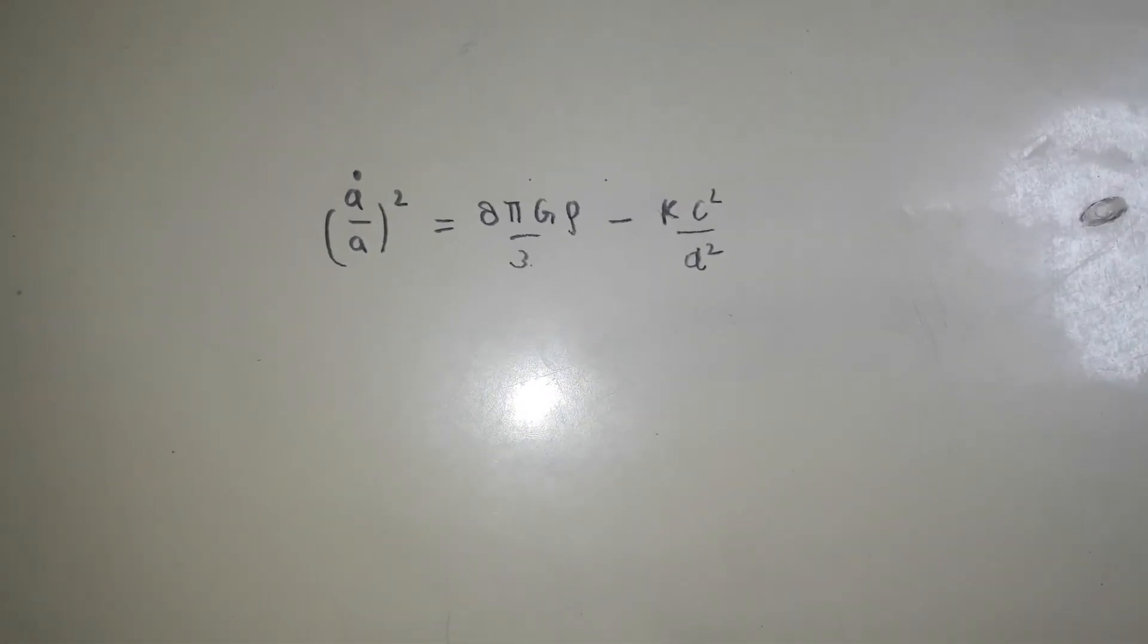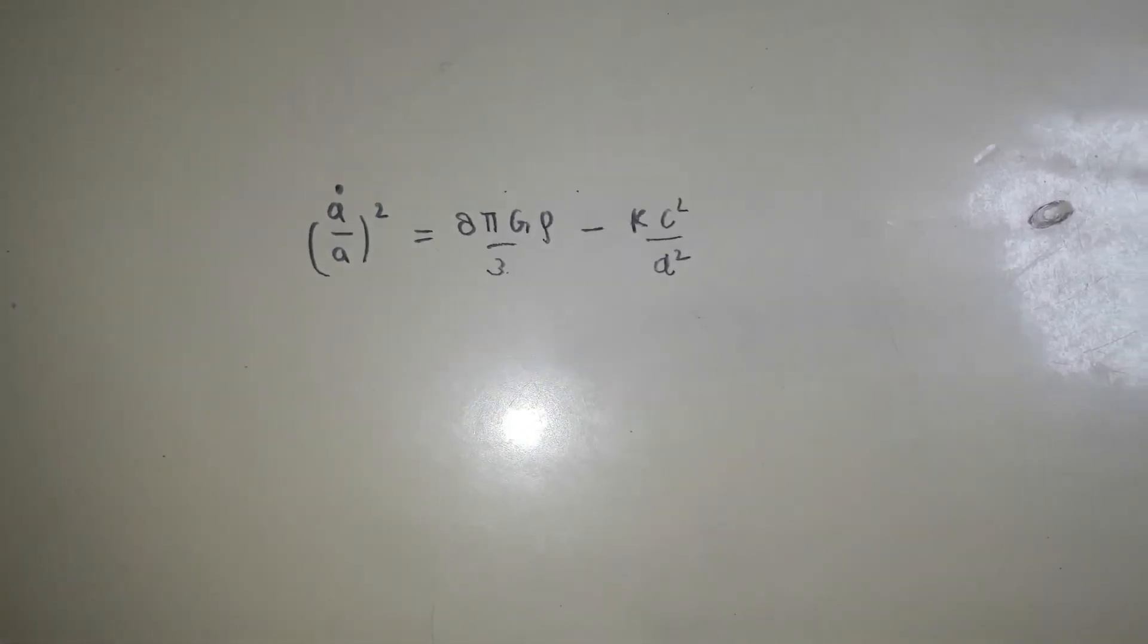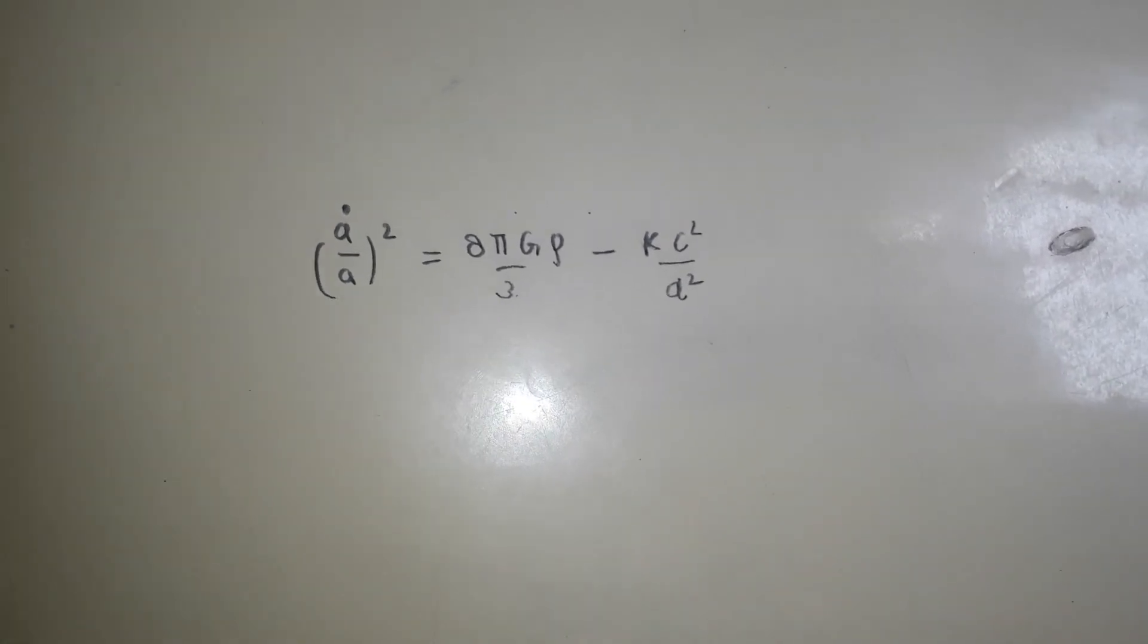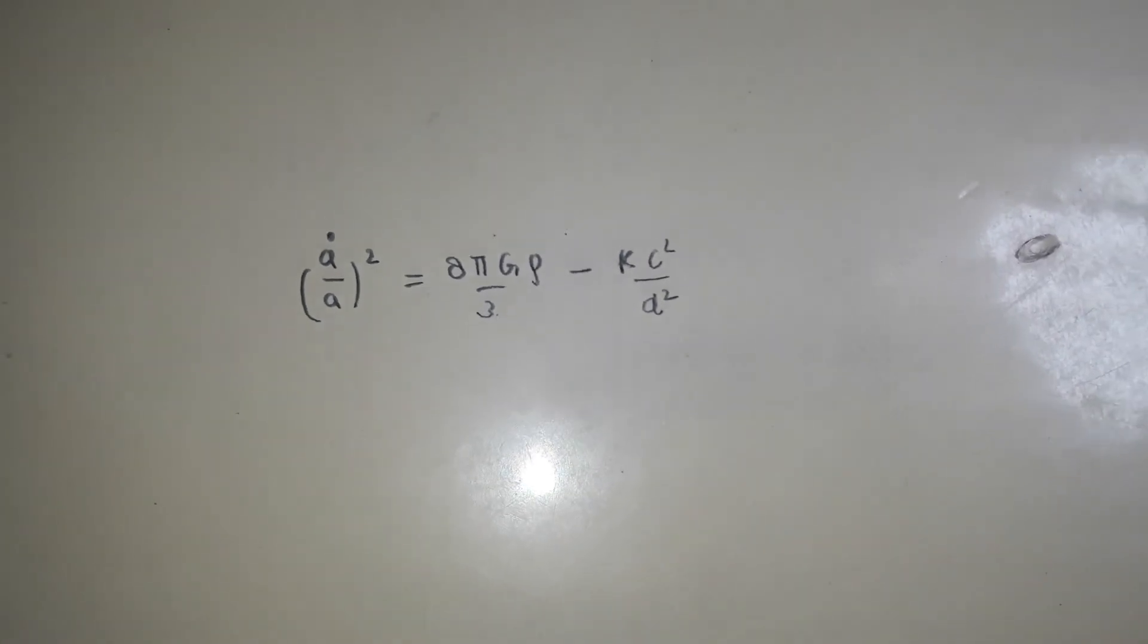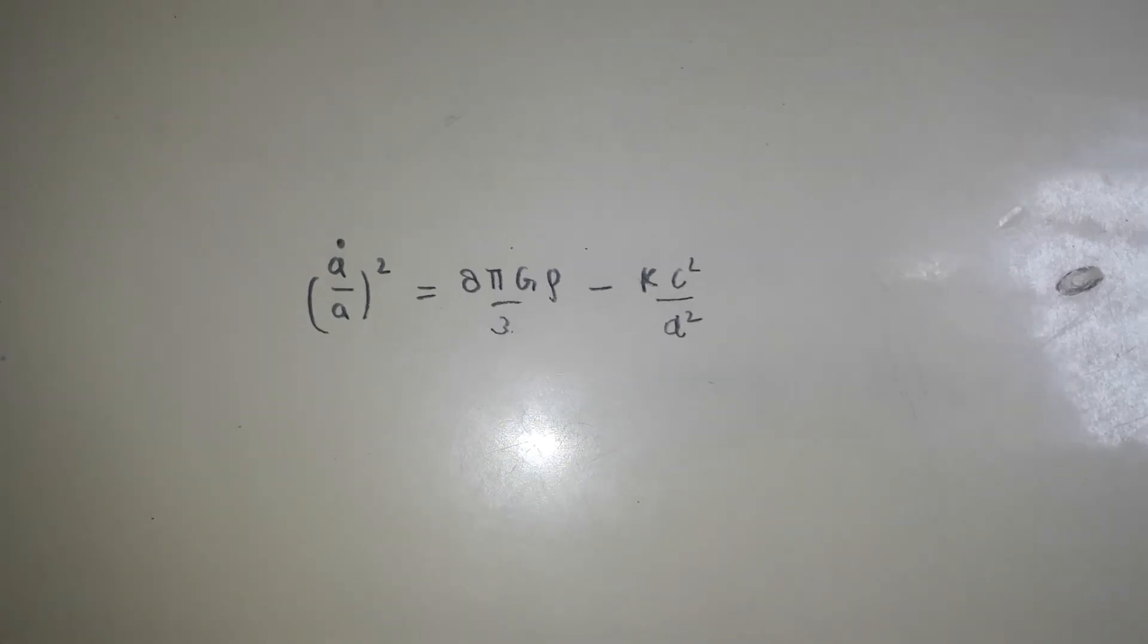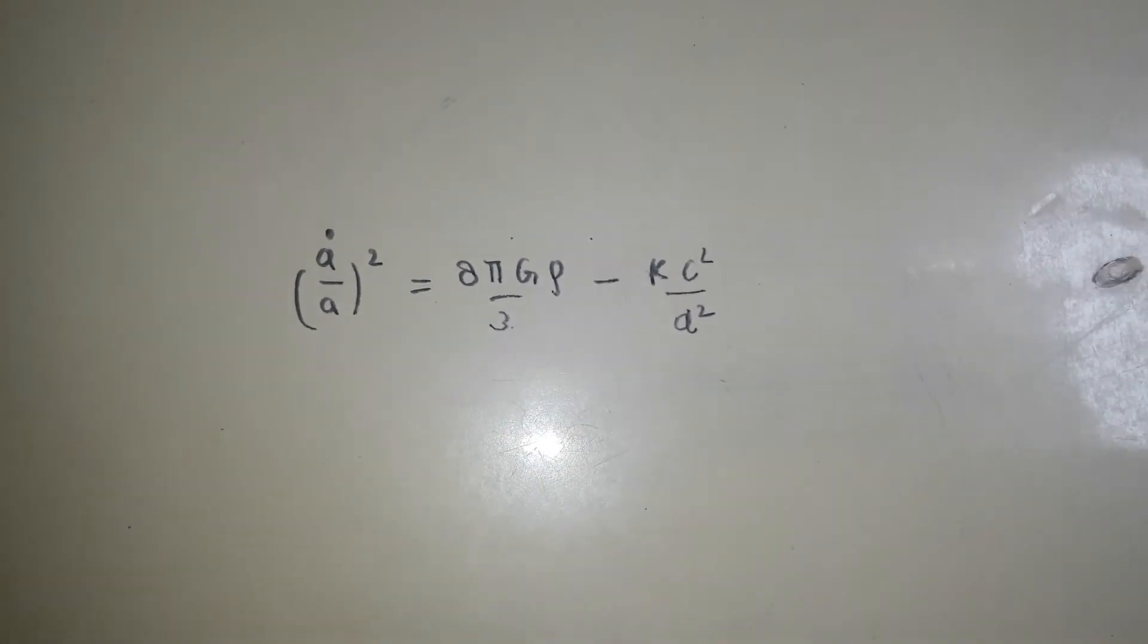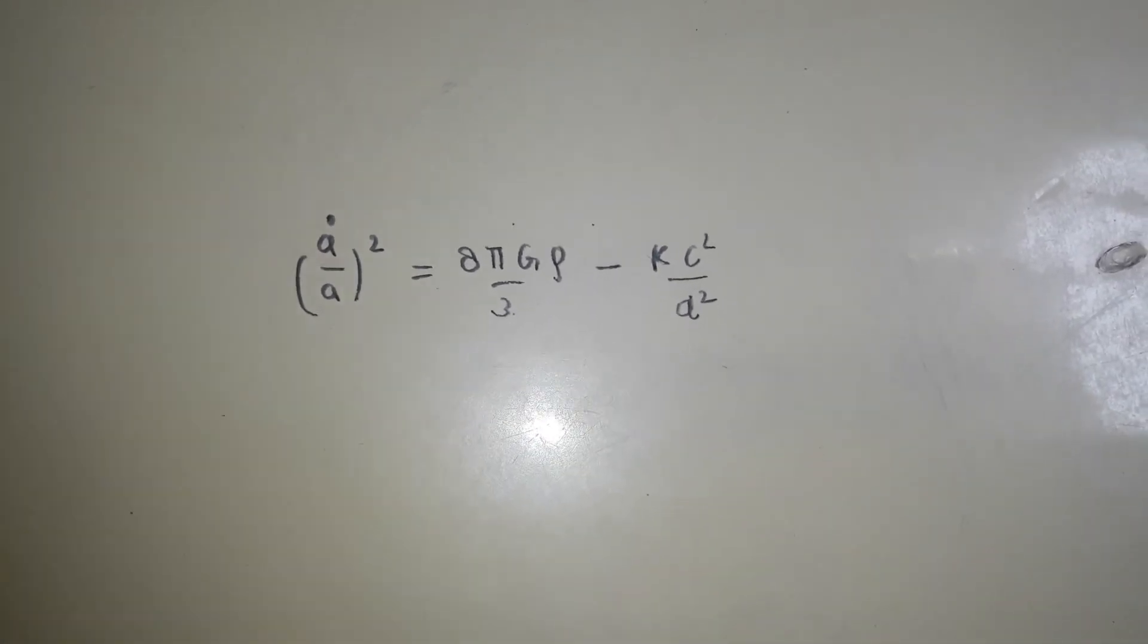While Einstein came up with the thought that it is a curvature in space-time. Every mass curves the space-time. It's a famous line that mass tells space-time how to curve and space-time tells mass how to move. So with all that theory, what Alexander Friedmann did was he gave an equation which tells us whether the universe is flat or spherical or saddle-shaped. These are the three possibilities.